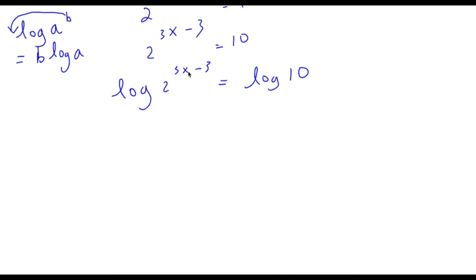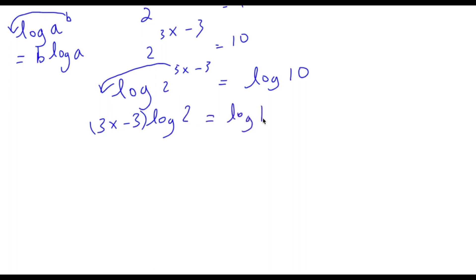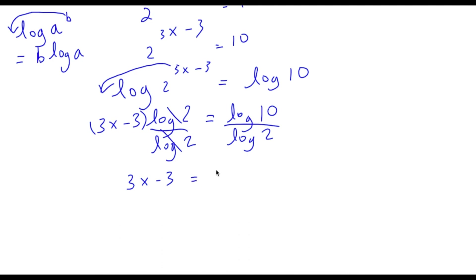So in this case, x is an exponent, and we want x to be an actual term. So I'm going to use this property and move our exponent, 3x minus 3, to the front. So now we have 3x minus 3 times log 2 is equal to log 10. Because we want to find our value for x, we're going to have to isolate it. So we can do that by dividing both sides by log 2, so these two cancel out and I'm left with 3x minus 3 is equal to log 10 over log 2.